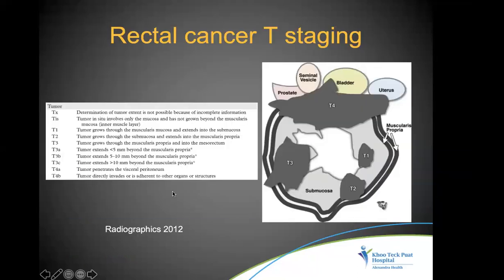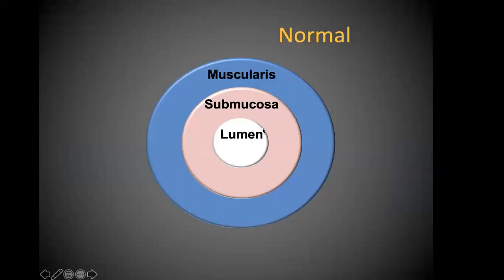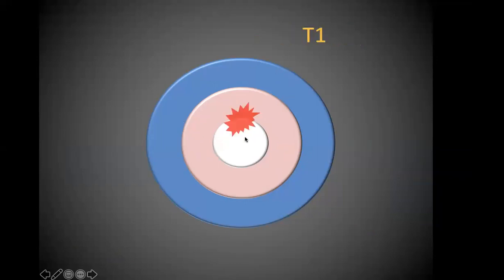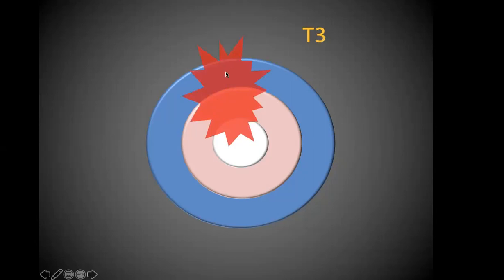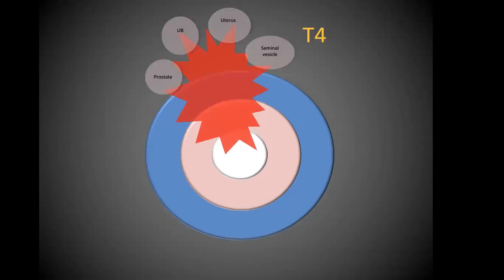Before going to MRI, we need to understand T-staging. In the schematic diagram, the lumen is white, submucosa is pink, and the blue is the muscularis layer. T1 is when the tumor is confined to the mucosa or submucosa. T2 is when the tumor has gone beyond the submucosa into the muscularis layer but not beyond it. T3 is when the tumor has gone beyond the muscularis into the surrounding planes — there is no serosa in the rectum, so it goes into the mesorectal fat.